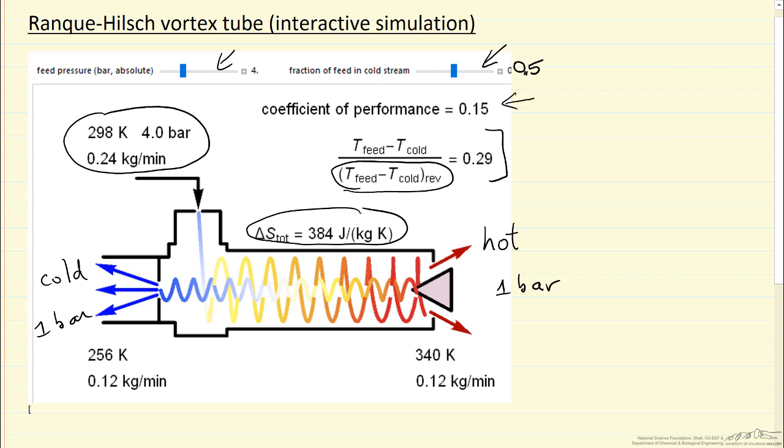The coefficient of performance is the product of the isentropic efficiency multiplied by the fraction of the cold gas, in this case 0.5. The coefficient of performance basically says if I had one mole of gas or one kilogram of gas coming in, and it went through isentropic expansion, reversible adiabatic expansion, we would cool that kilogram down to a certain temperature. We only have half as much gas that gets cooled down, so the net cooling available would only be 0.15.